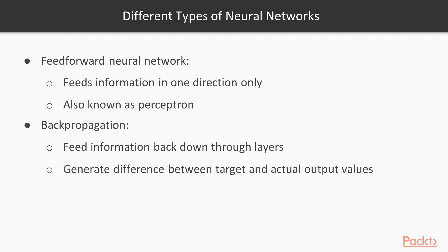Neural Networks can also feed information back down through the layers. One method for this process is known as backpropagation, which feeds back through the system to generate the difference between the target and actual output values. Next we will dive deep into backpropagation and feedforward neural networks.